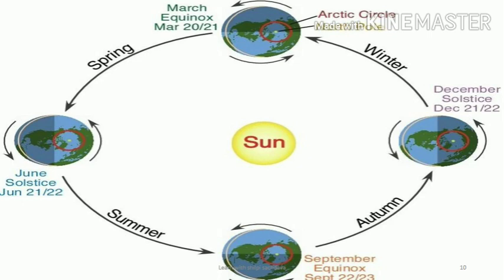Now let's move to the Winter Solstice, which appears in the month of December, especially on 22nd December. Places in the Southern Hemisphere experience the longest day and the shortest night on 22nd December, as the position of the South Pole is inclined towards the sun, and the South Pole receives the rays vertically over the Tropic of Capricorn. Therefore, it is summer season in the Southern Hemisphere.